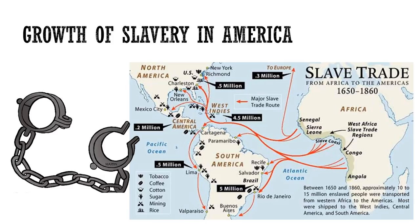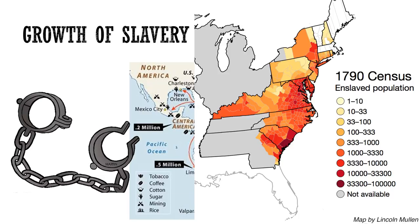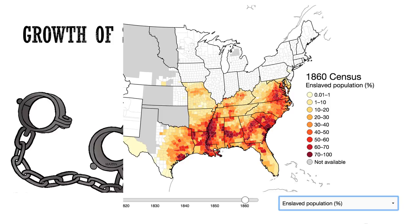Between 1650 and 1860, about 10 to 15 million enslaved people were transported from Western Africa to the Americas. Most were shipped to the West Indies, Central America, and South America, as you can see from this map. Check out this map from 1790, which shows the enslaved population immediately following the Revolutionary War. As the United States expands in land size, you will notice how the slave population moves toward the South over the next 60 years. This map shows the enslaved population in 1860. Notice how concentrated the slave populations are in places like Virginia, South Carolina, Georgia, Alabama, and along the Mississippi River in Louisiana and the state of Mississippi. This is what the map of the United States looks like in the South a year before the Civil War begins.